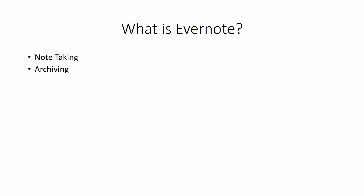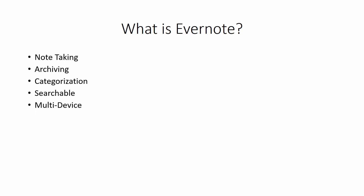You have a place not only where you can store, but also where you can categorize. One of the key features in Evernote is that it is made for categorization, meaning your content will be searchable according to the system you set up. Evernote can be used on multiple devices — it will work on your personal computer or Mac, on your mobile device, and also as a cloud application from your browser.